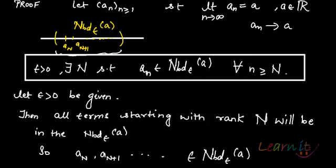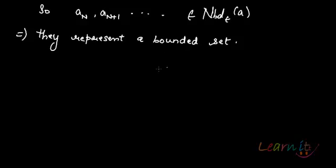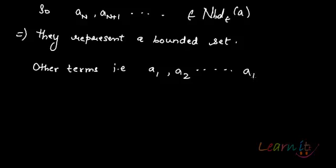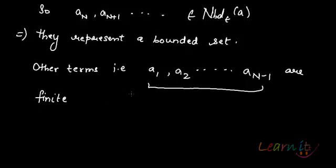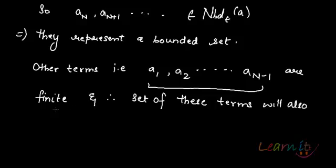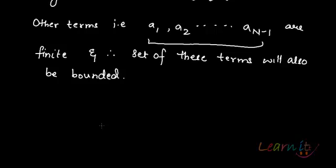Apart from that, what are the other terms that are left? The other terms are a_1, a_2, up to a_(N-1). You can see that these are finite terms. And therefore, the set of these terms will also be bounded because they are finite terms — bounded above and bounded below.